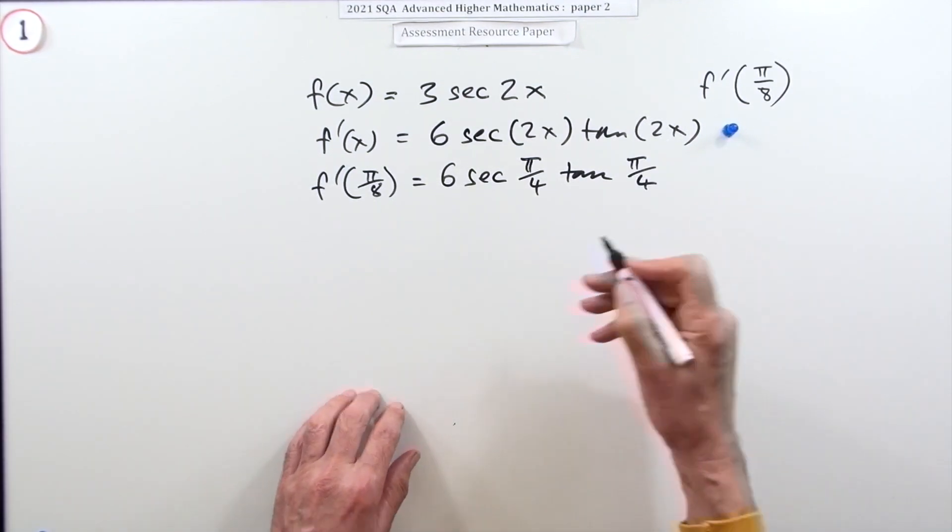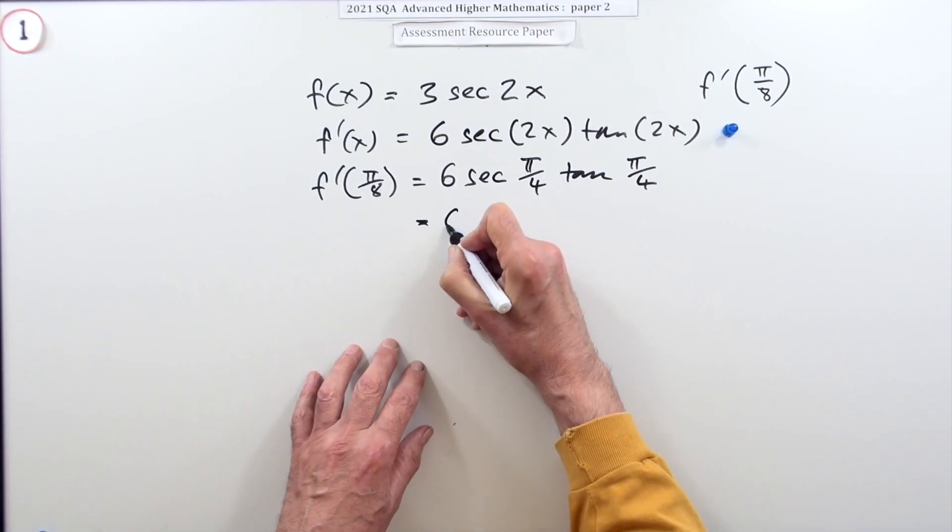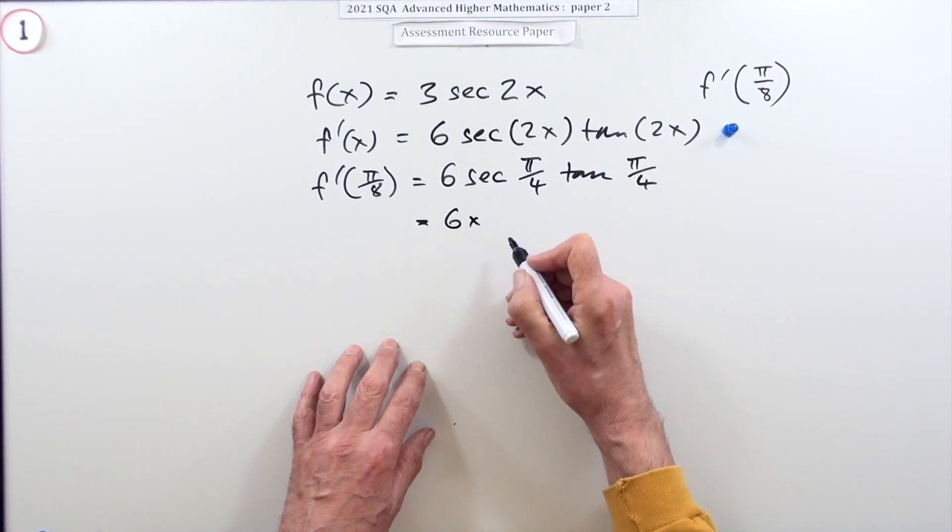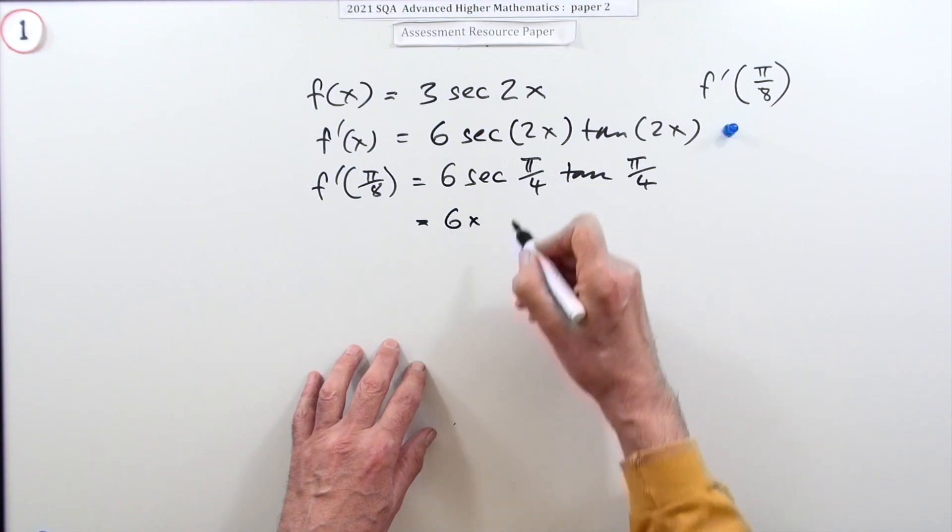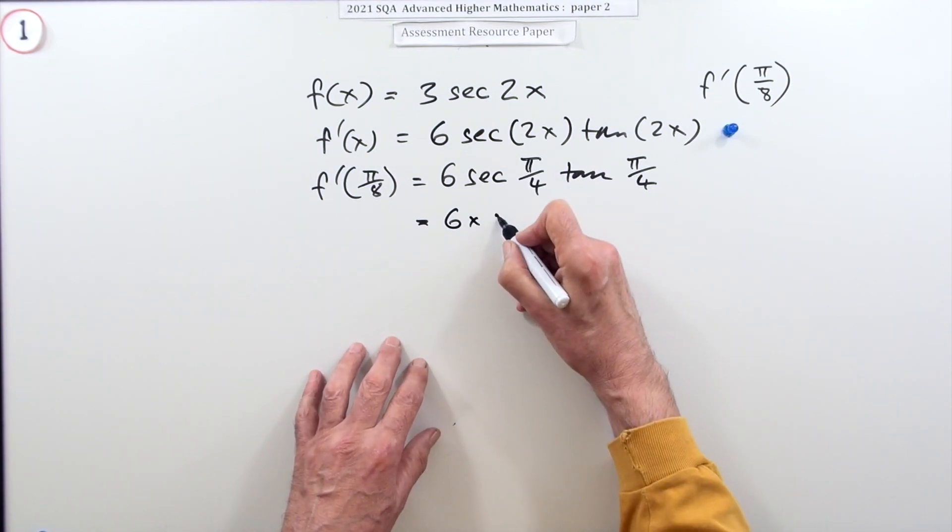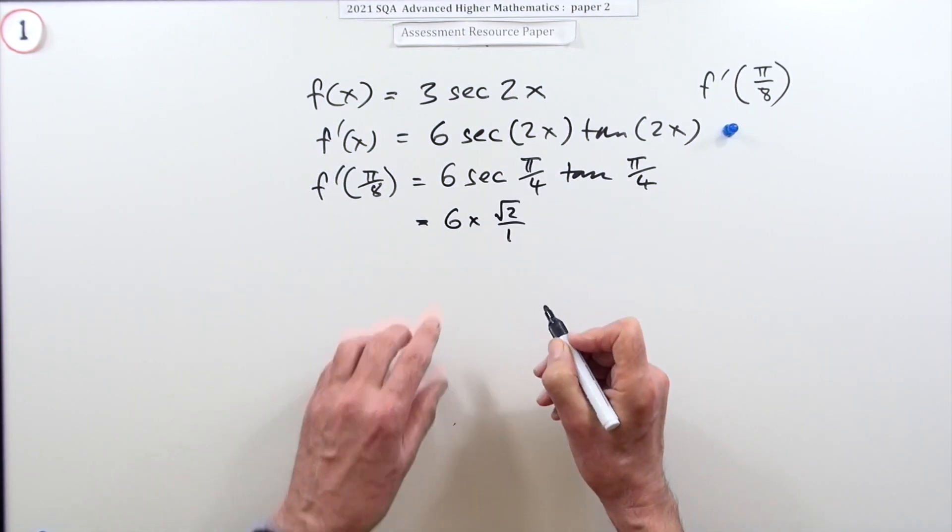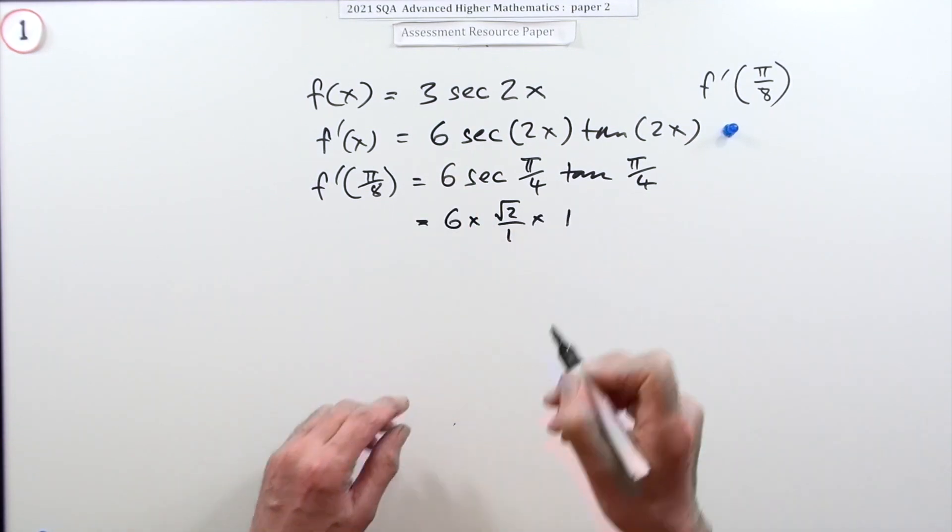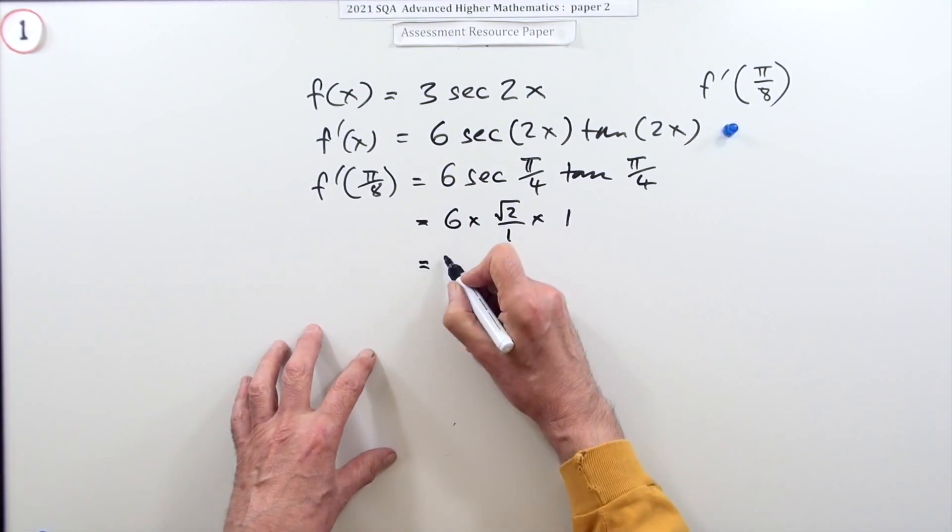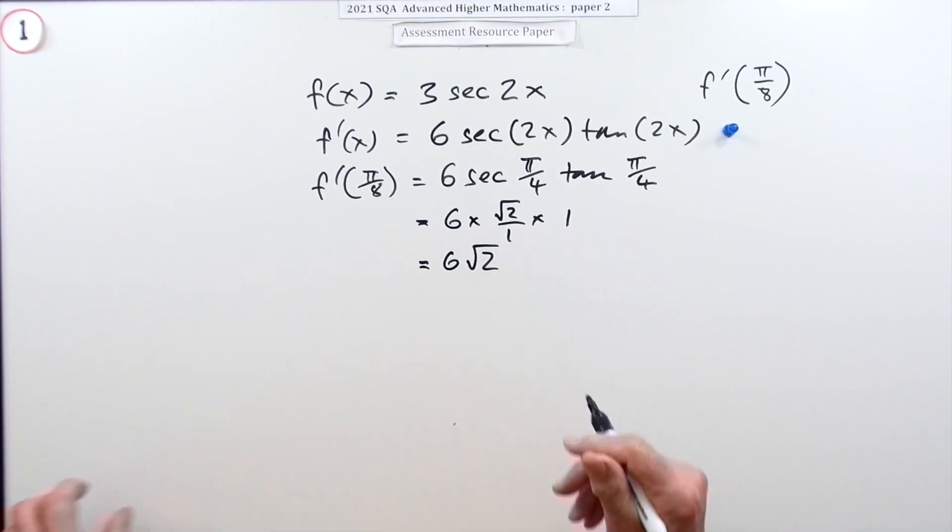It'll be six times now sec is one over, so it'll be one over one over √2, so that'll be √2/1 because it's a reciprocal of cosine, and that'll just be one, so it means all together the answer is just 6√2.